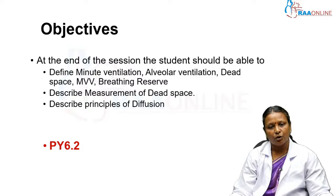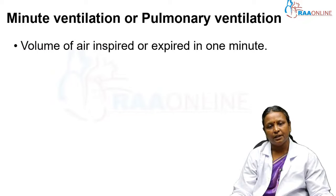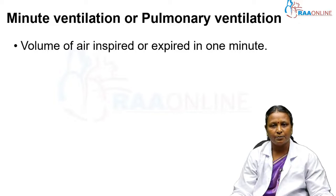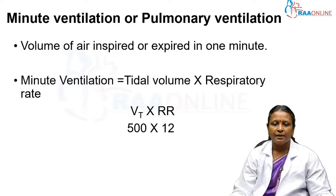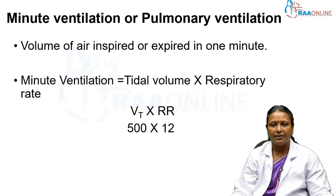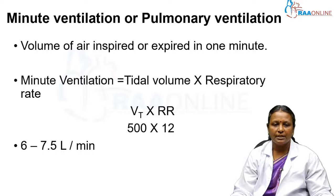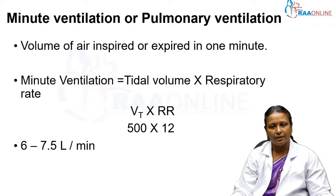What is minute ventilation? It is the amount of ventilation happening in the lung per minute, otherwise called pulmonary ventilation. Minute ventilation is the volume of air inspired or expired in one minute. It equals tidal volume multiplied by respiratory rate. The normal respiratory rate is 12 to 16 per minute, and tidal volume — the volume of air breathed in and out during a normal respiratory cycle — is around 500 ml. This gives a minute ventilation of 6 liters per minute, with a range of 6 to 7.5 liters per minute.